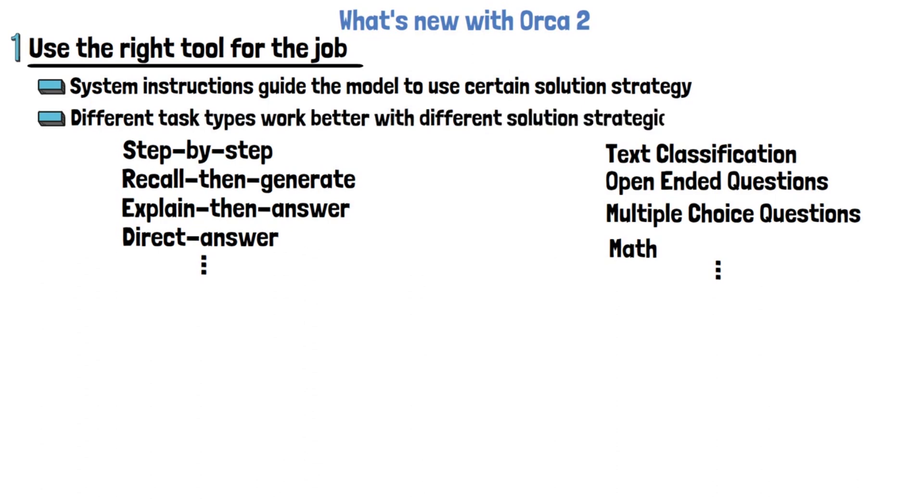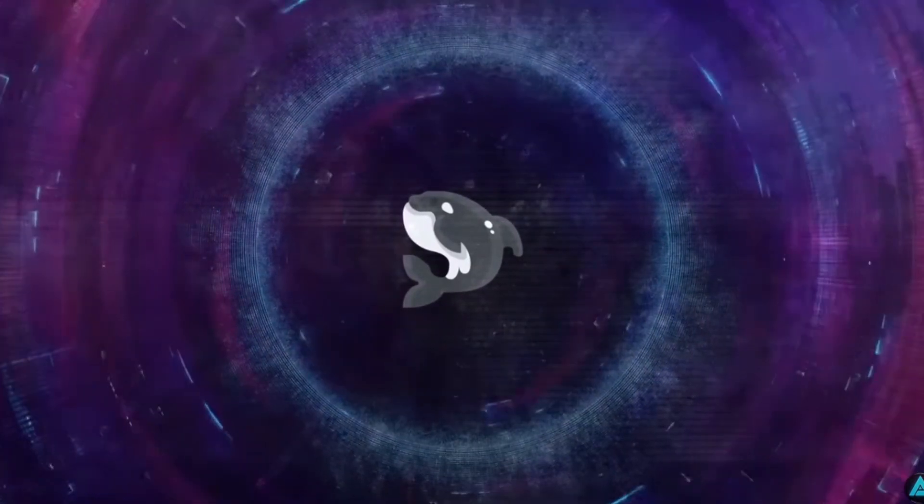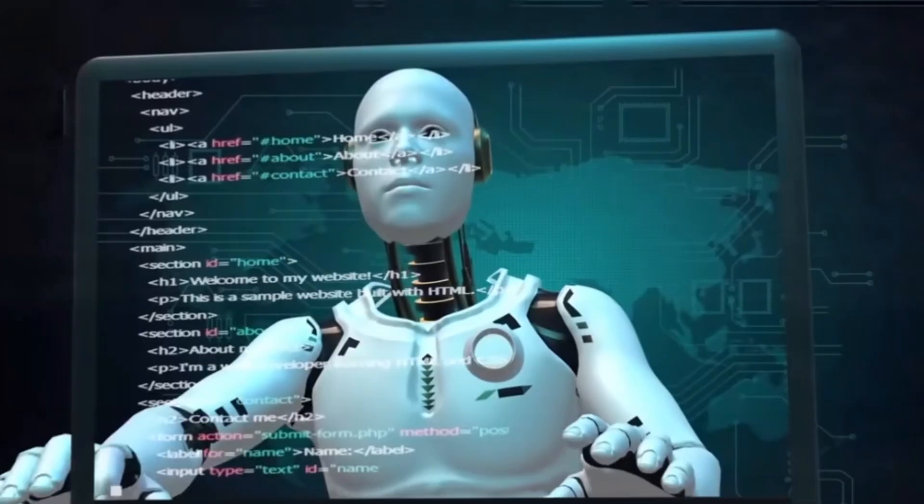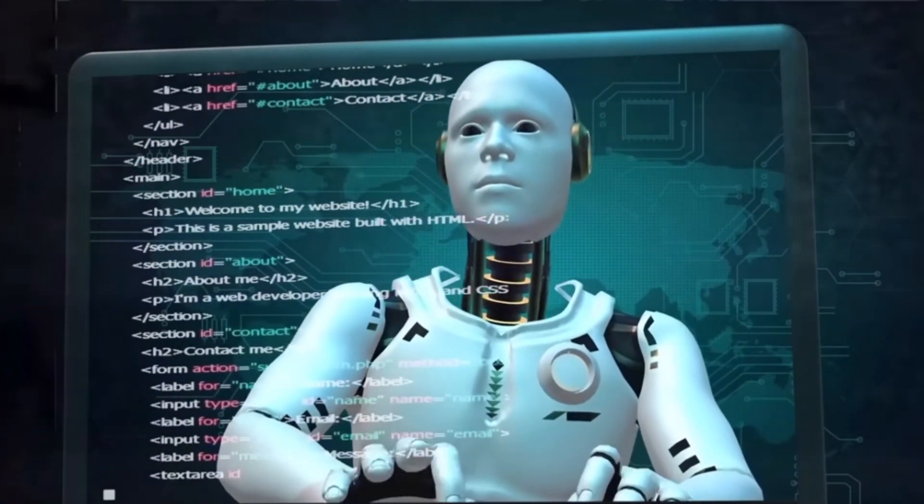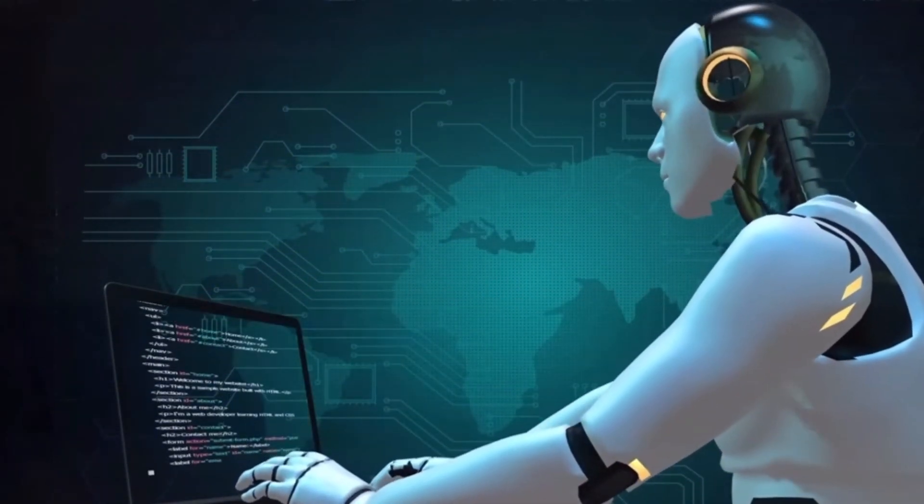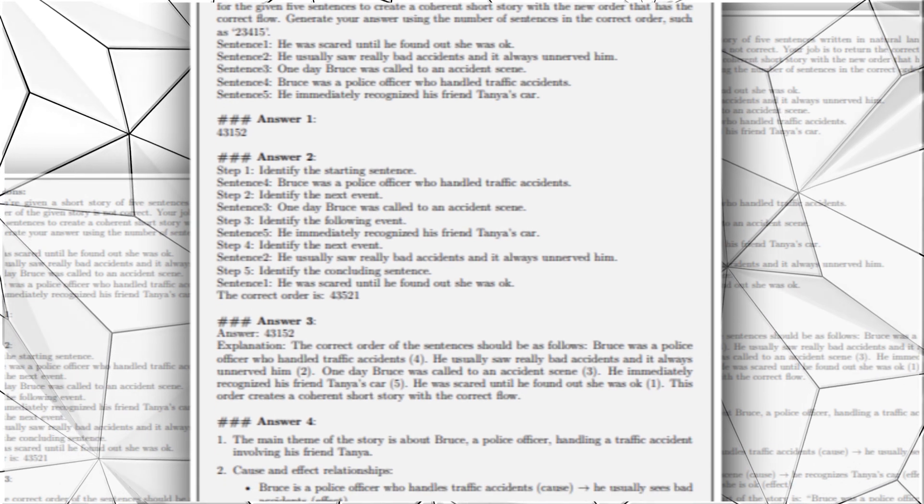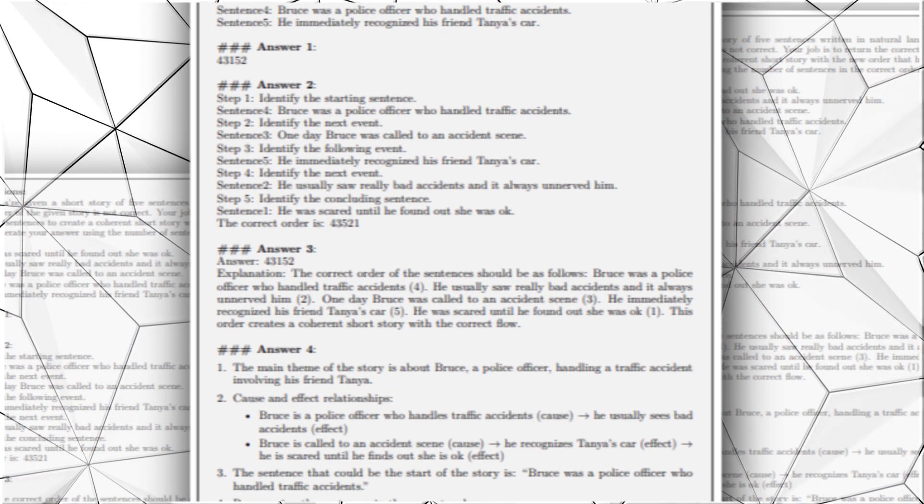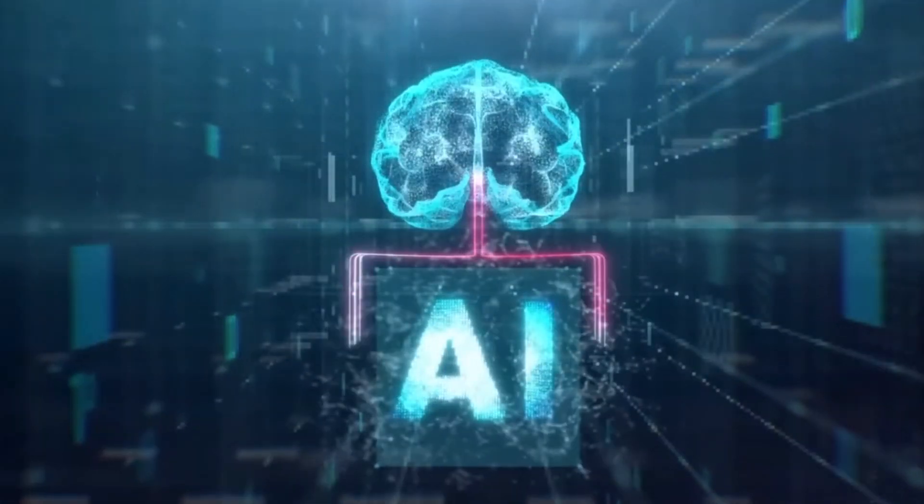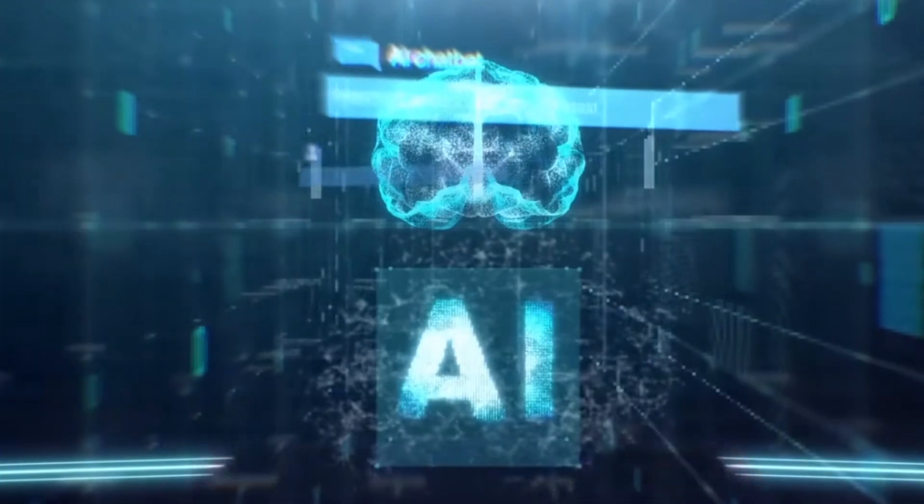Some of the reasoning skills the small model picks up are recall then generate, step-by-step, recall reason generate, direct answers and others. Of all the skills we just mentioned, step-by-step is the most crucial to Orca AI's operation. Since smaller models can't measure up to the computing capacity of big models, they don't have the luxury of solving complex questions in one shot. Step-by-step reasoning allows them to break down one big answer into piecewise solutions. By doing so, Microsoft AI can take on complex tasks that require very high reasoning power.